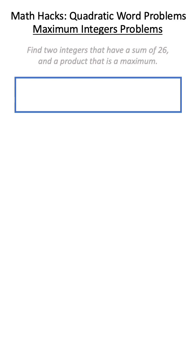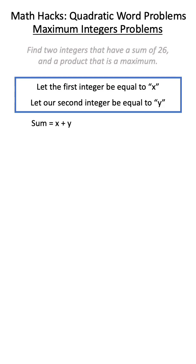The first thing we'll do is define our two variables. We'll set our first integer to be equal to x and our second integer to be equal to y. We know that the sum will be x plus y and that this is equal to 26. We also know the product will be x times y.